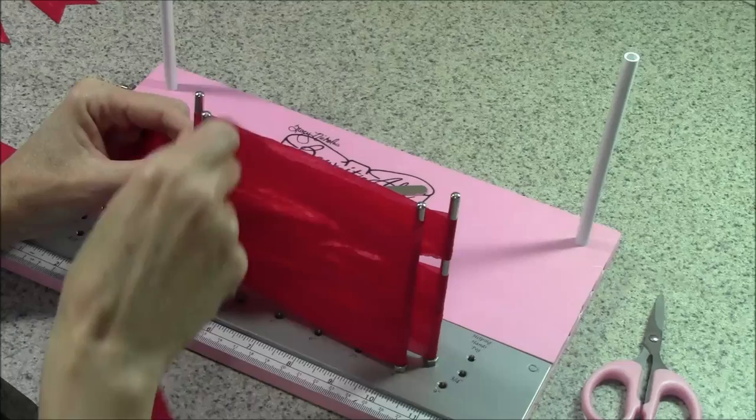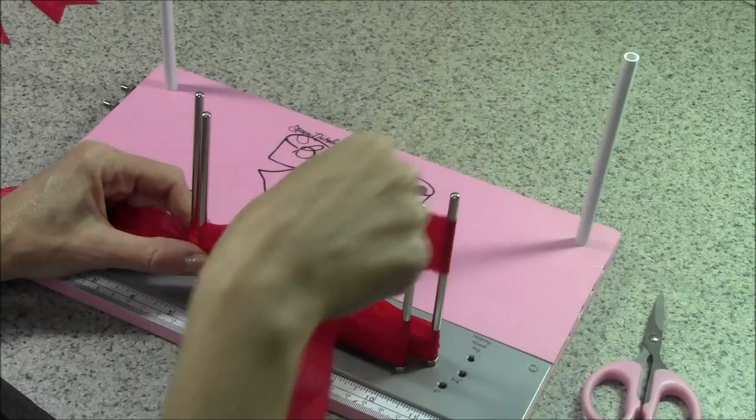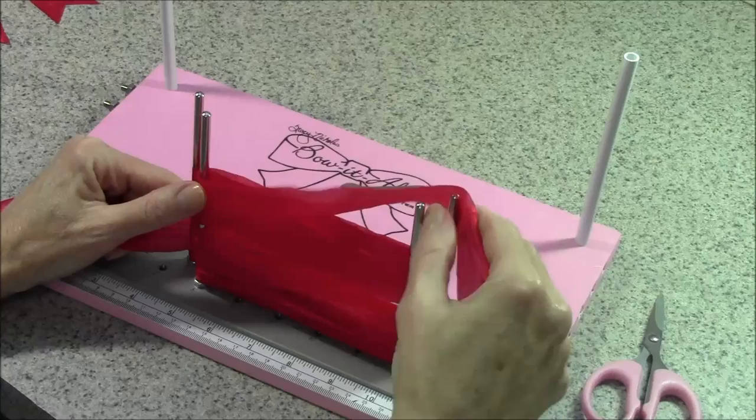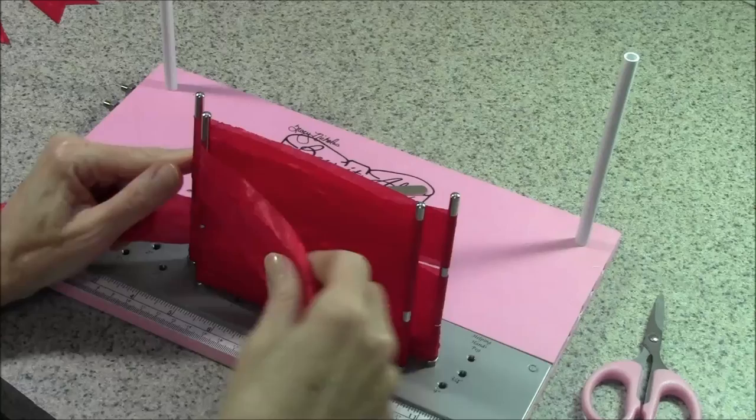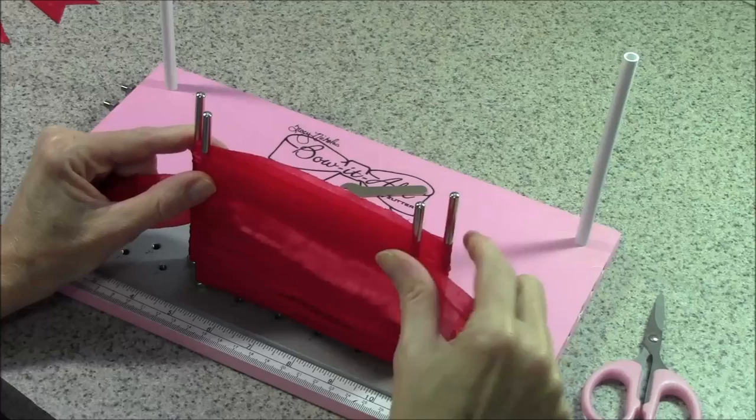So that's three on each side and we're out of pegs. What I do then is just scrunch that down as far as it will go and then keep wrapping. Every time you run out of room, just scrunch it down a little tighter so you can get some more loops on there.